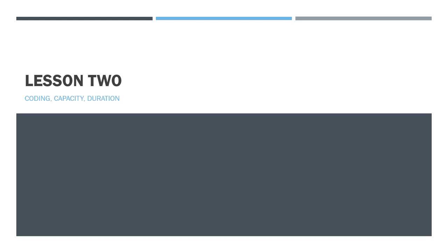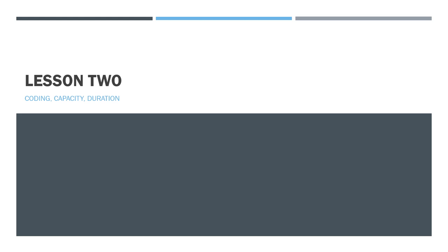Note the answers down and then check them with your notes to make sure you're comfortable with them. The questions are: who conducted research into coding? Who conducted research into chunking? What is the capacity of long-term memory? How is short-term memory coded? Who did research on the capacity of short-term memory? And how is long-term memory coded? Quickfire - pause it here, a couple of minutes tops, then check with your notes.